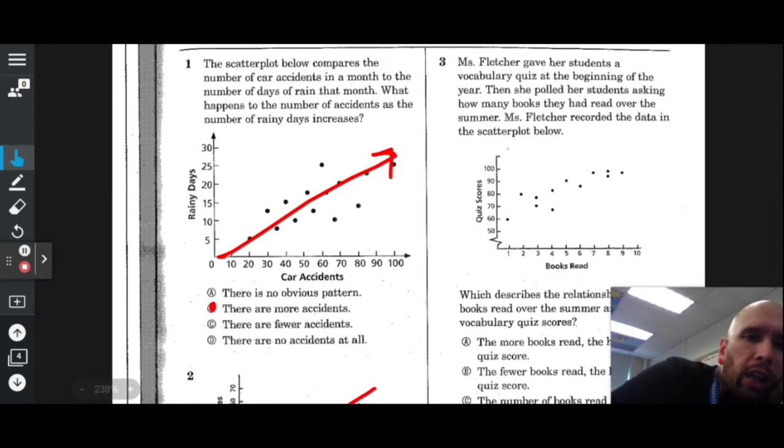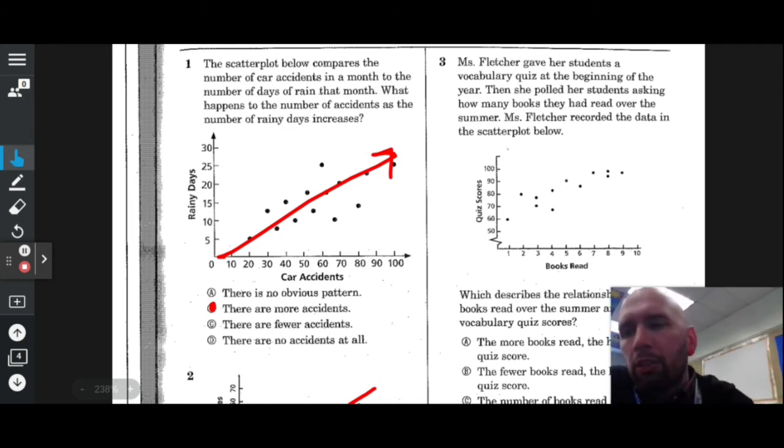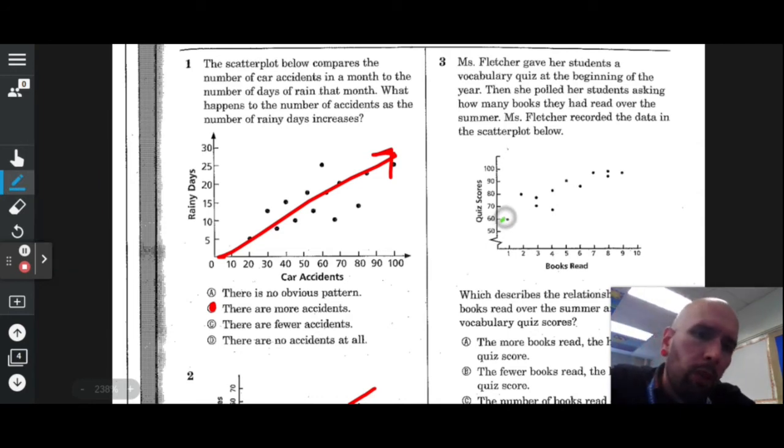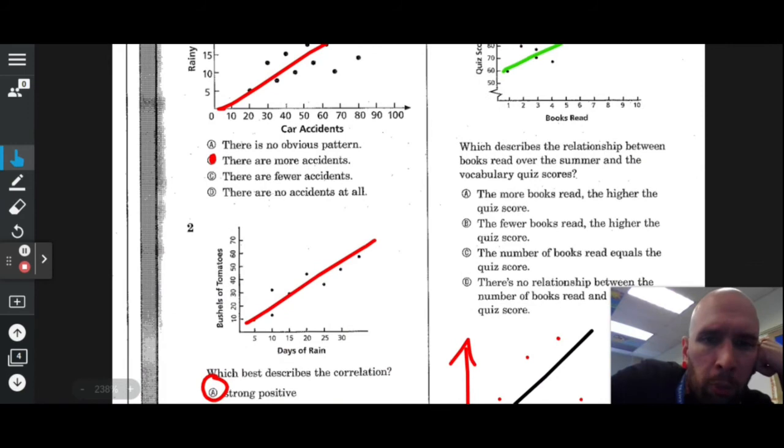Ms. Fletcher gave her students a vocabulary quiz at the beginning of the year. She then polled her students asking how many books they had read over the summer. She recorded the data in the scatter plot below. It seems to me that we have another positive correlation. Here's my line of best fit. The more books read, the higher quiz score. What describes the relationship? The more books read, the higher the quiz score. Boom, done.